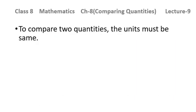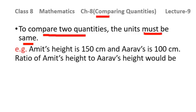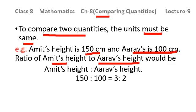As this is the chapter of comparing quantities, if we need to compare two quantities the units must be same. If the units are not same, then we need to convert one unit into the other. For example, Amit's height is 150 centimeter and Arav's height is 100 centimeter. We need to find the ratio of Amit's height to Arav's height. It will be 150 ratio 100, which equals 3 ratio 2.